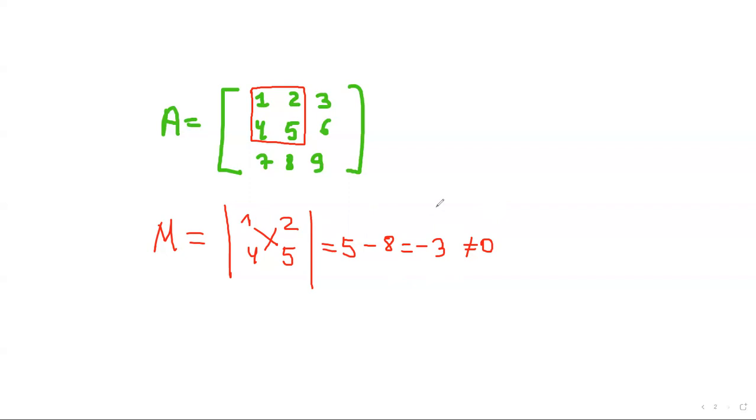And in this case, rank can be 2. But we don't know exactly if it's 2 or not. We are going to check it. In order to check it, we are taking a bigger matrix, a bigger minor, which has got this minor in it. So the minor which covers all these 1, 2, and 4, 5 is the determinant of A itself.